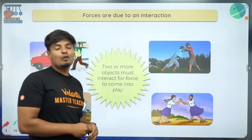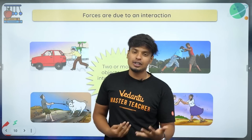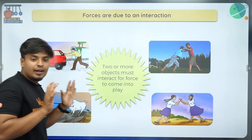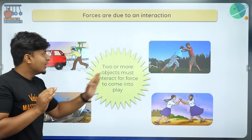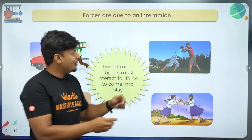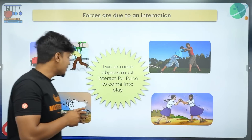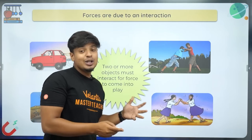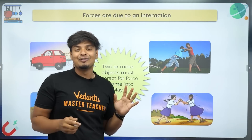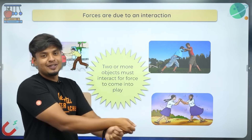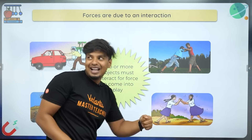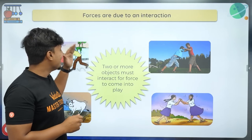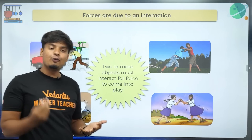Why does force happen? It's because of interaction. When two objects interact with each other, force comes into play. For example, one person pushing a car is interacting with it; two people pushing each other are applying force; a person pulling a cow is applying force. Two or more objects must interact for force to come into play — a single object cannot exert force alone.